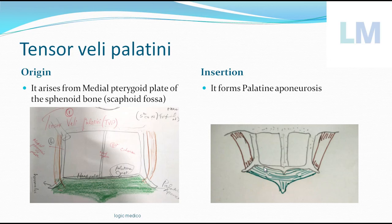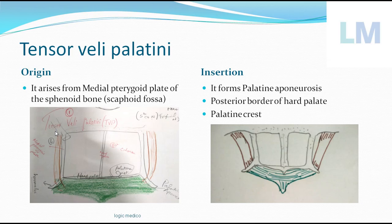To summarize the origin: it arises from the lateral surface of the Eustachian tube and the lower surface of the greater wing of the sphenoid bone — the scaphoid fossa. It runs parallel to the medial pterygoid plate, hooks around the pterygoid hamulus to form the palatine aponeurosis, which attaches to the posterior border of the hard palate and the palatine crest.